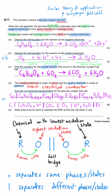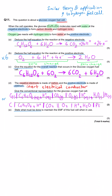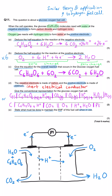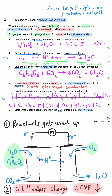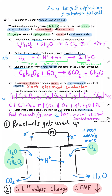The final part asks what must be done to maintain the EMF of the fuel cell when in use. When the cell operates, the reactants get used up, so you need to continuously add new reactants — new glucose and new oxygen — to keep the reactant concentrations constant. You can state either: add reactants continuously, or keep the reactant concentrations at a constant value.